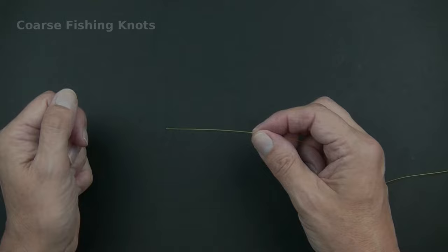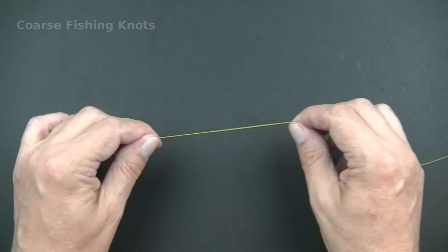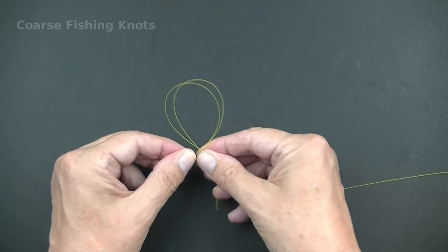How to tie the Figure of Eight Loop Knot. Form a single loop in the line. Hold the very end of the loop and make a double loop across the main line.